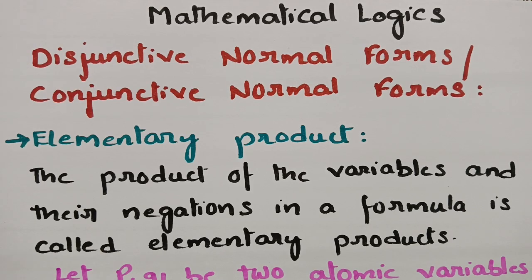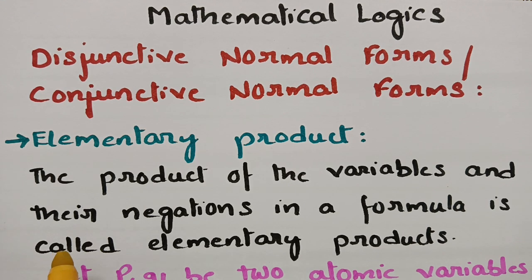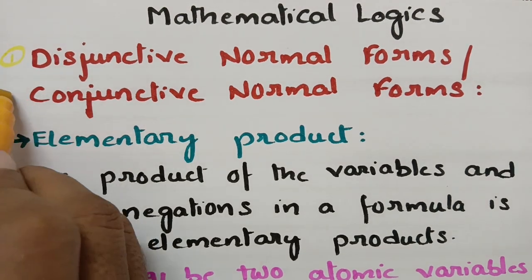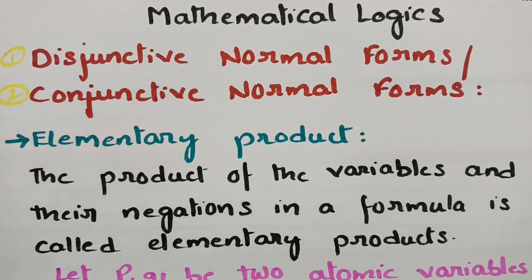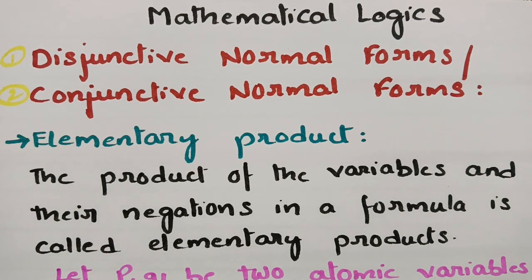This video is on normal forms, a topic from mathematical logic related to MFCS, DMGT, and DMS. In today's video I am going to give clear clarity on what normal forms are and what are the types of normal forms. There are two types: one is disjunctive normal form and the other is conjunctive normal form.